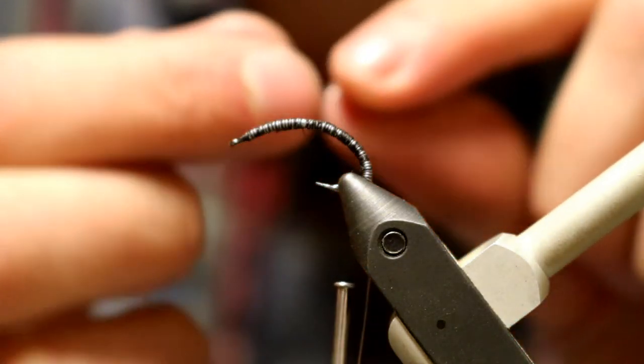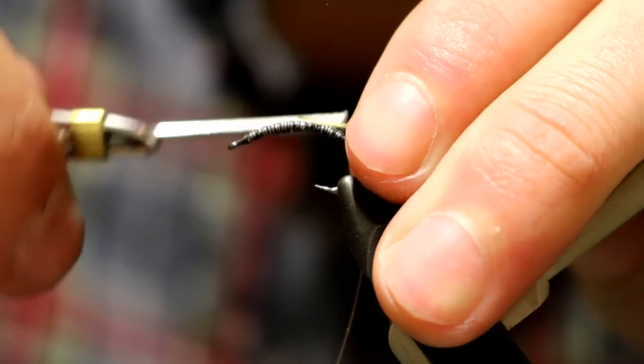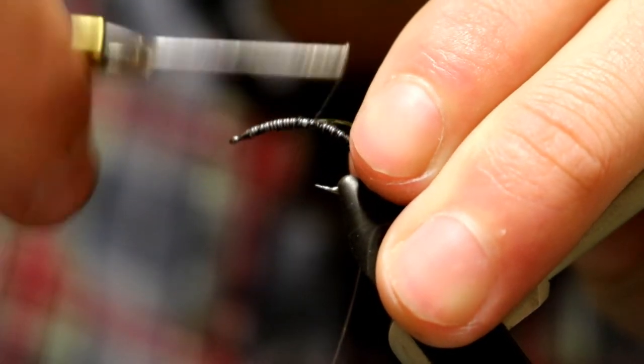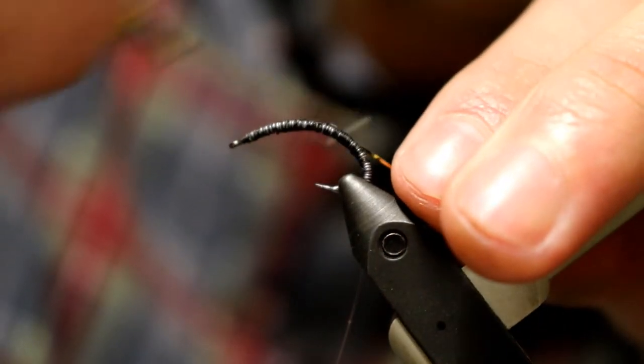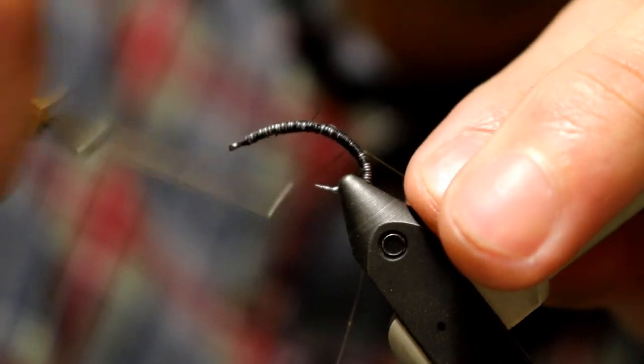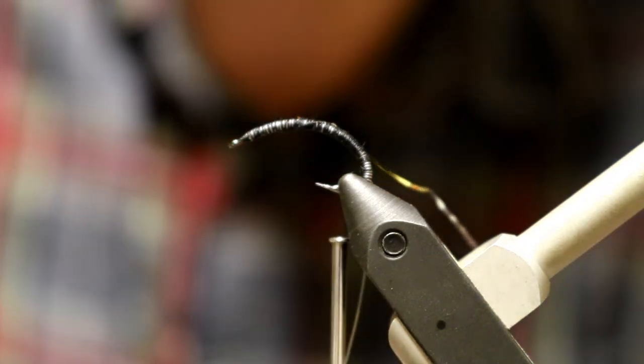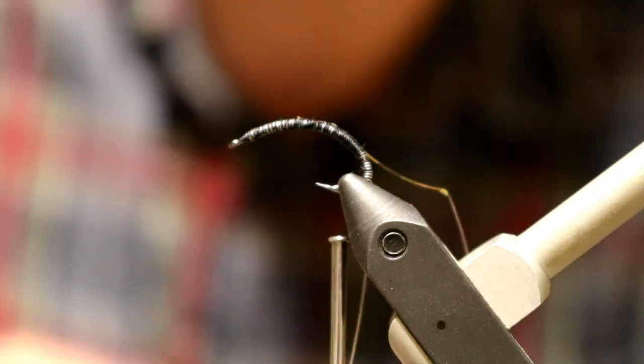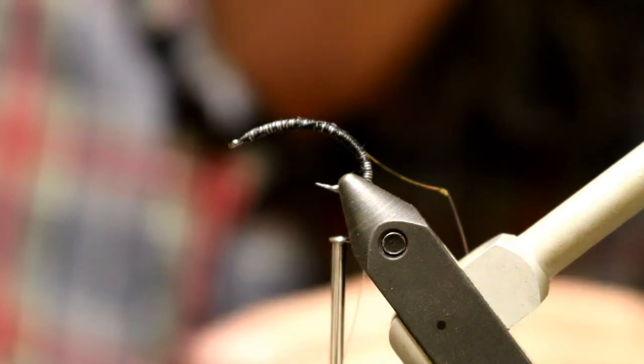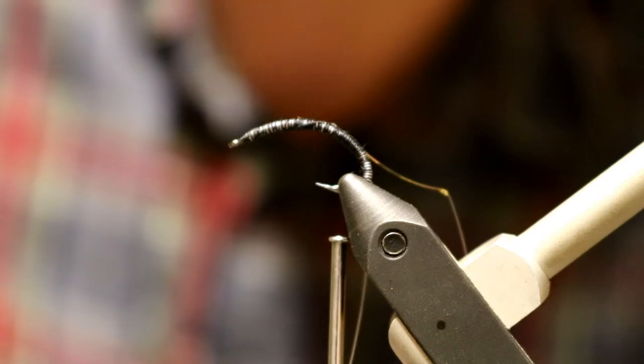Next thing we're going to do is tie in our tinsel. Same thing, bring it up the fly. Wrap it down very well. Now you'll only need three inches at most of that tinsel material, most likely less, but I like to be conservative in my estimates, or I like to be very liberal with my estimates and overshoot the amount I'm going to need, because it's always easier to cut a little bit off of the tag than it is to go in and add more.